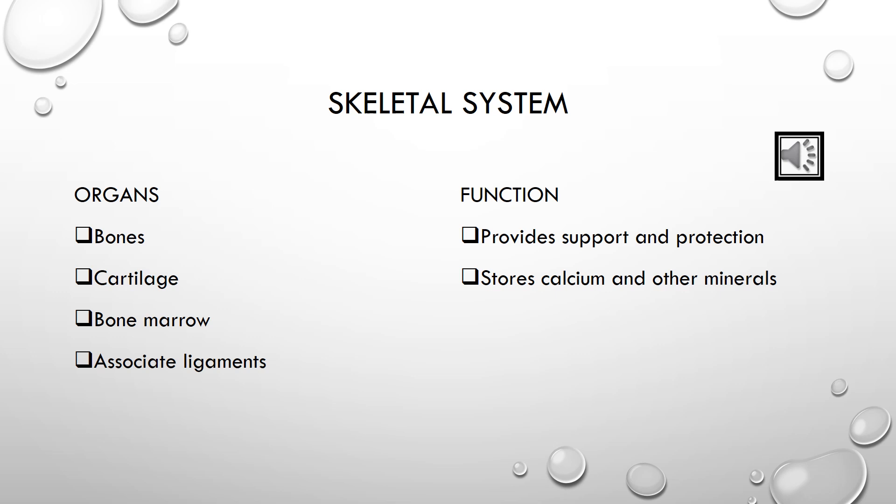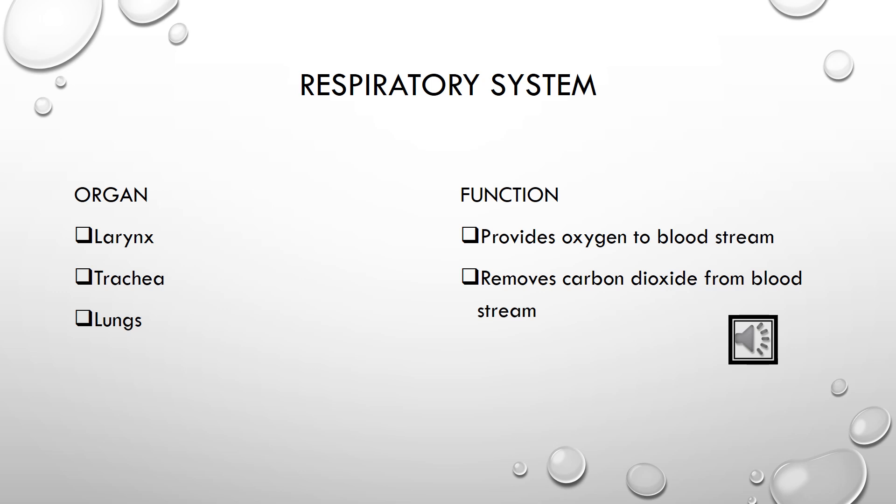The skull protects our brain and eyes. The respiratory system is the network of organs and tissue that helps in the process of breathing. The system helps the human body to absorb oxygen so that organs can work properly. It also cleans waste gases such as carbon dioxide from the blood and provides oxygen to the blood.